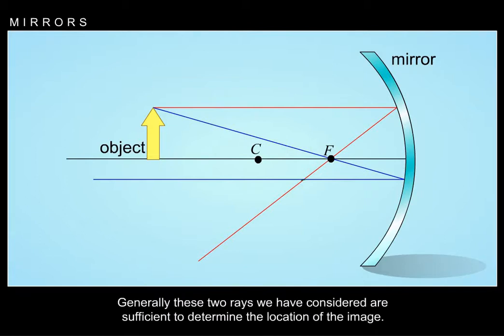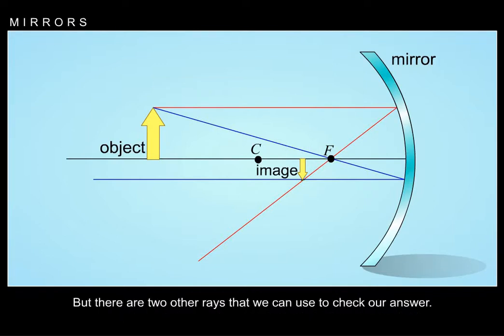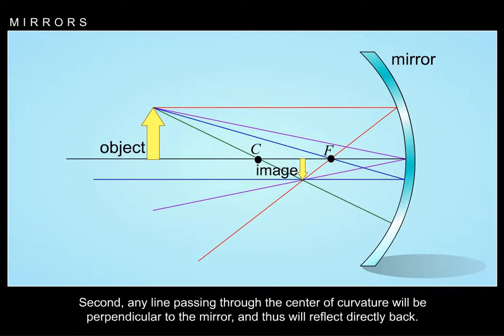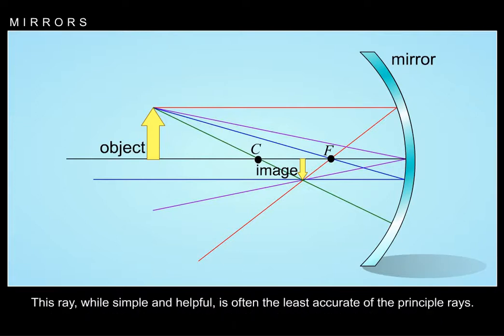Generally, these two rays are sufficient to determine the location of the image, but there are two other rays we can use to check our answer. First, the ray that touches the center of the mirror effectively hits a flat vertical mirror, so the angle out equals the angle in. Second, any line passing through the center of curvature will be perpendicular to the mirror and thus will reflect directly back. This ray, while simple and helpful, is often the least accurate of the principal rays.